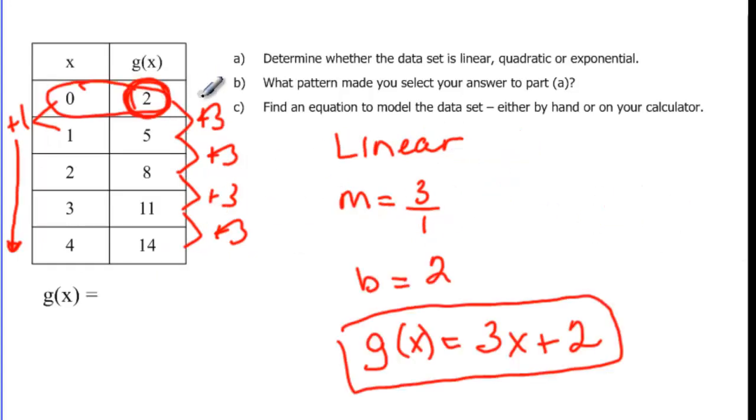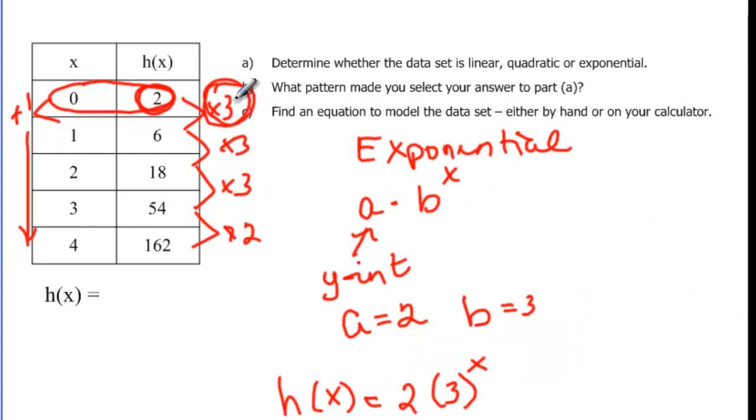And linears we add the same thing consistently from one point to the next. That tells us it's linear. And exponentials we multiply consistently from one to the next, so that we can have an exponential function.